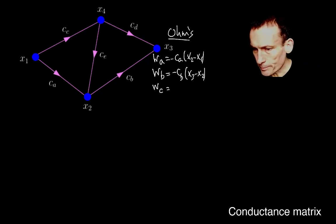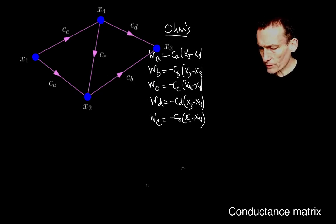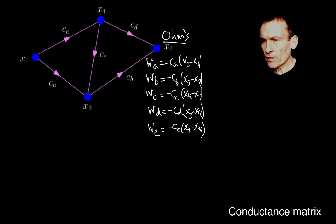The current in edge C will be the conductance of edge C times X4 minus X1. And then WD, the current in edge D, will be the conductance of edge D times X3 minus X4. And then the current in edge E is the conductance minus the conductance of that edge times X2 minus X4. Let me just put those over there so you can see them properly.